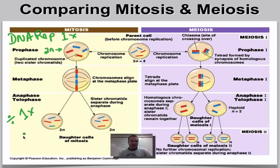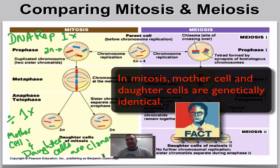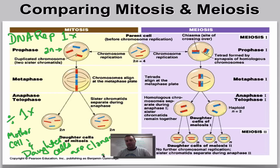So what happens here is the mother cell and daughter cells are clones — in other words, they're genetically identical. That's what we mean by that.